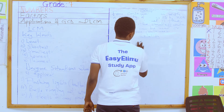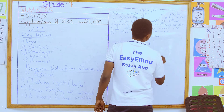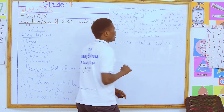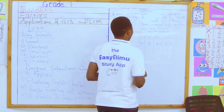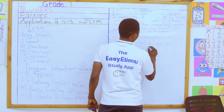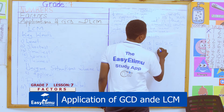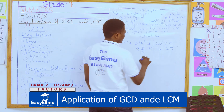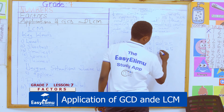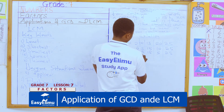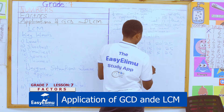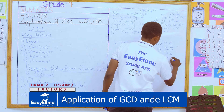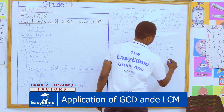We are solving the LCM of 10, 15, 20, and 25. We start with the least prime number that can go into any of them. 2 into 10 = 5, 15 stays, 20 ÷ 2 = 10, 25 stays. Again: 2 into 5 stays, 15 stays, 10 ÷ 2 = 5, 25 stays. Then 3: 5 stays, 15 ÷ 3 = 5, 5 stays, 25 stays. Next: 5 ÷ 5 = 1, 5 ÷ 5 = 1, 5 ÷ 5 = 1, 25 ÷ 5 = 5.